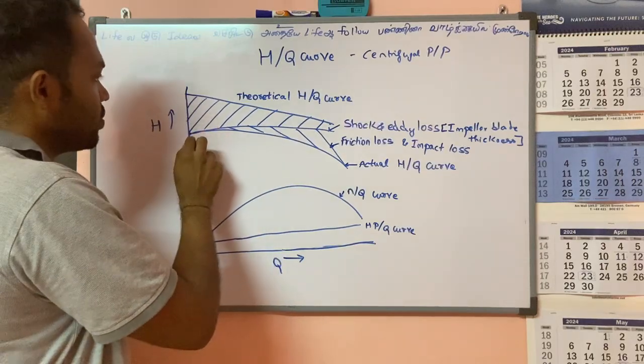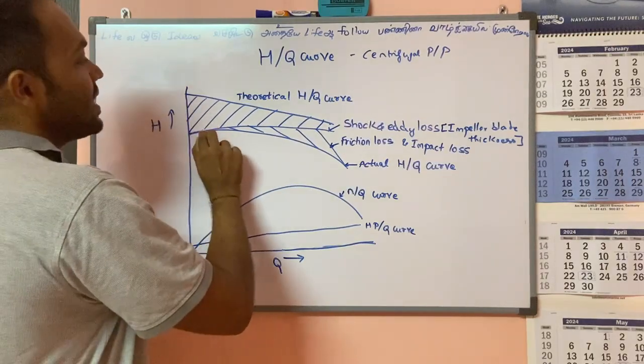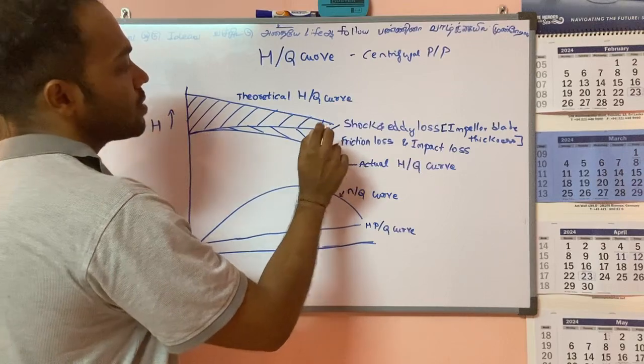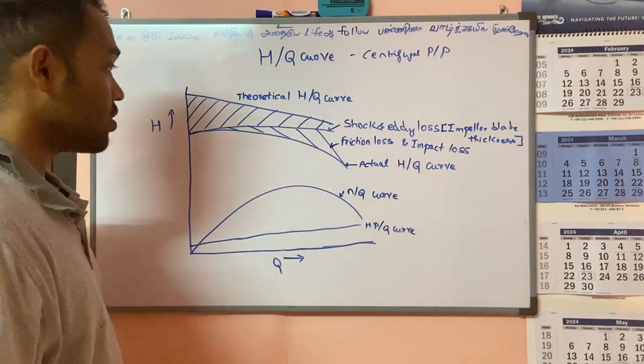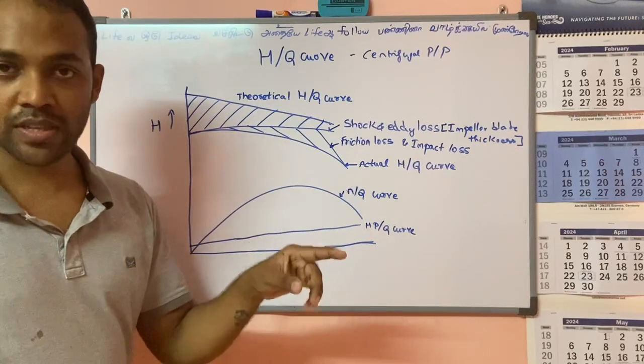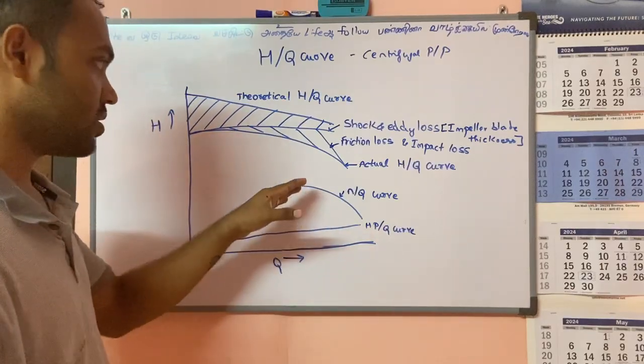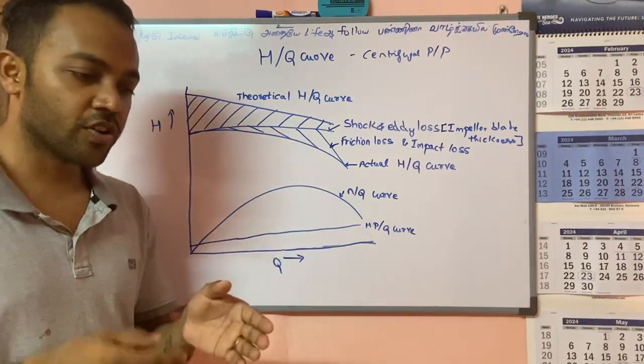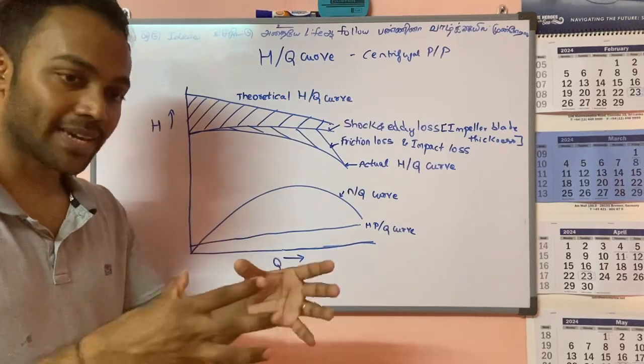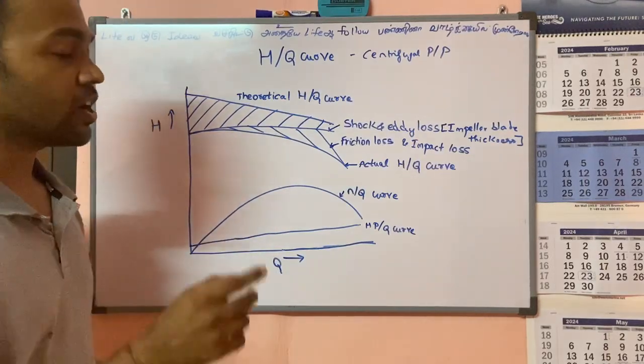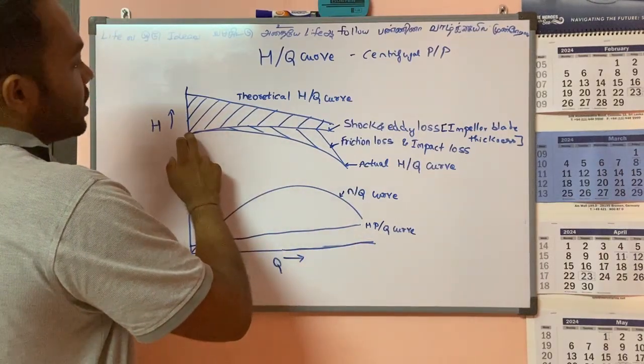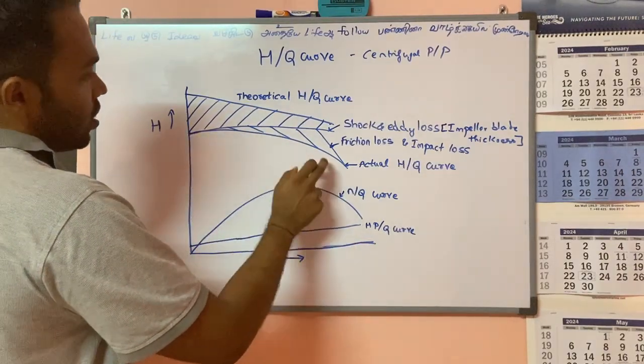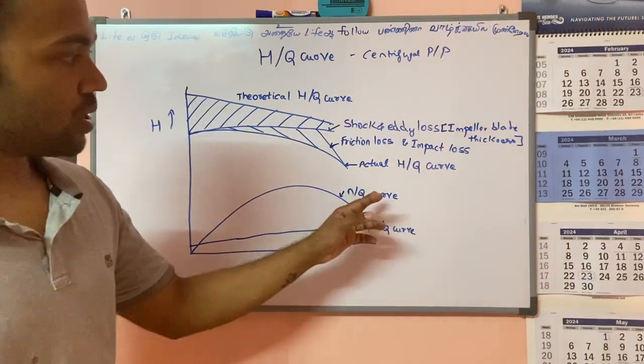It is slightly increasing at minimum throughput conditions. And also with these losses, there is frictional loss which is caused by the fluid contact inside the pump casing and inlet. Along with the impact losses, there is a drop in the throughput along the curve, which is the actual H/Q curve. So this is the actual H/Q curve.